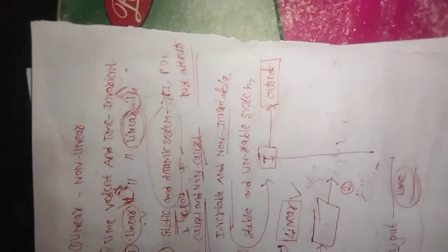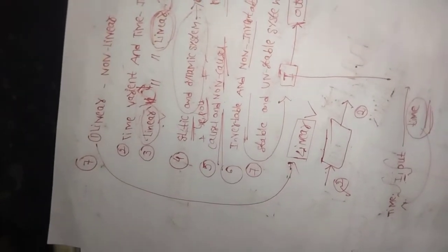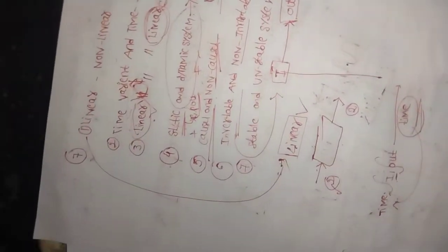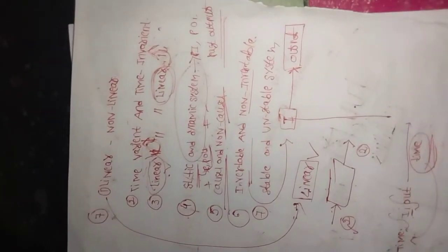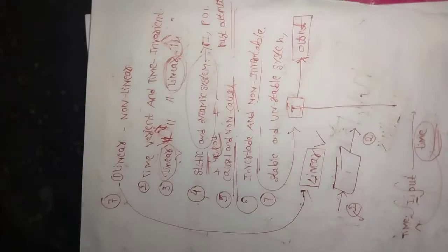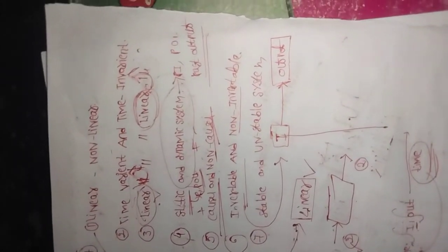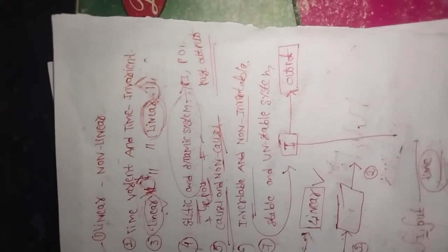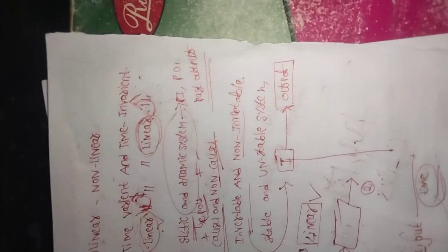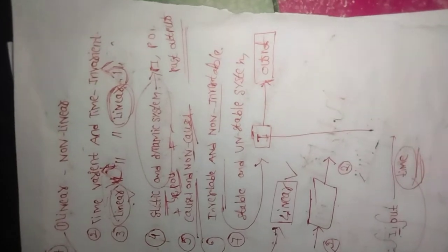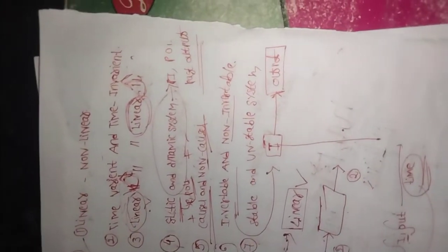An invertible system: the output appears at the system. A non-invertible system: output appears differently. Last and final: a stable system is said to be stable when it produces a bounded output for a bounded input. A bounded output is a finite output. An unstable system produces an infinite output for a finite input.